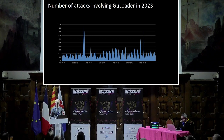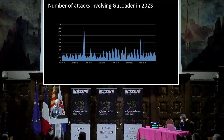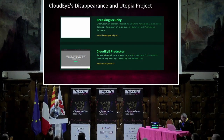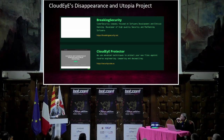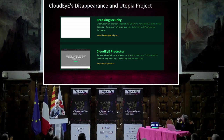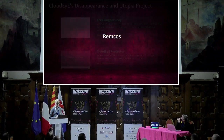Within a few months, however, CloudEye's website resumed sales, and over the past few years we continue to observe a consistently high number of attacks using GuLoader. However, advertising for CloudEye disappeared from hack forums where it was previously actively discussed. This led us to believe that, besides the official website, CloudEye is being sold somewhere else under a different name. We began to look for any mention of CloudEye Protector on the internet and found the Utopia Project website, where CloudEye Protector is listed in the merchants section right after Breaking Security, the official website of Remcos.